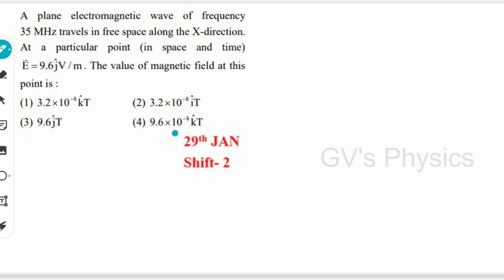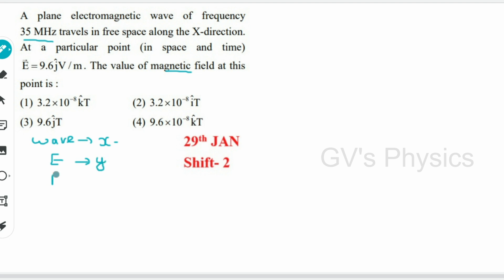Next, the 29th January shift 2 question: a plane electromagnetic wave of frequency 35 MHz is travelling in free space along the x direction. At a particular point, E = 9.6 ĵ V/m. The value of the magnetic field is asked. First we find the direction — the wave propagates in x, the electric field is along y (ĵ), so the magnetic field must be along the z direction (k̂).